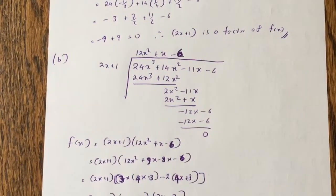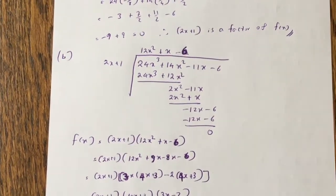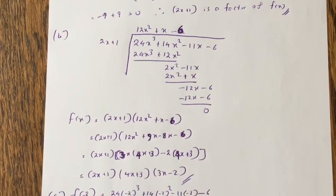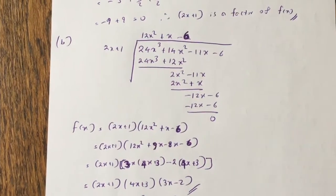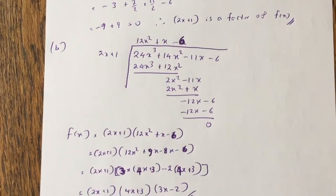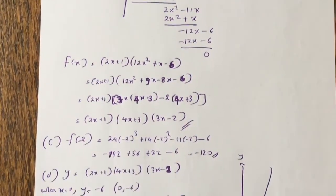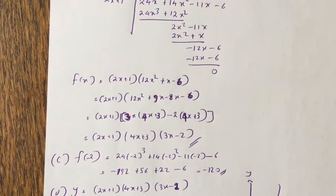For part b, first you use long division to get the quadratic, and then you factorize the quadratic, and you get the three factors: 2x plus 1, 4x plus 3, 3x minus 2. Part c, f of minus 2 works out to be minus 120.